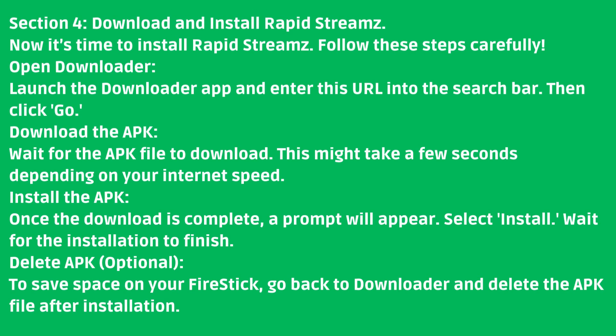Section 4: Download and install RapidStreams. Now it's time to install RapidStreams — follow these steps carefully. Open the Downloader app and enter the URL into the search bar, then click Go. Wait for the APK file to download; this might take a few seconds depending on your internet speed. Once the download is complete, a prompt will appear — select Install and wait for the installation to finish.